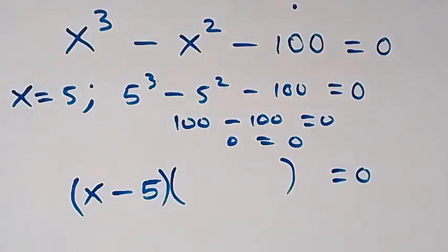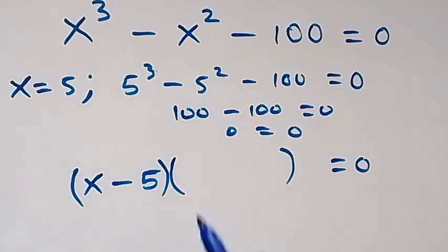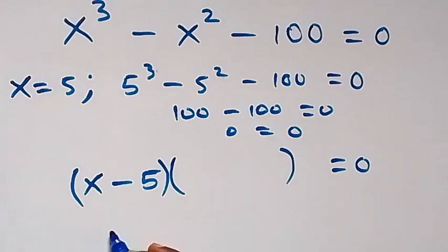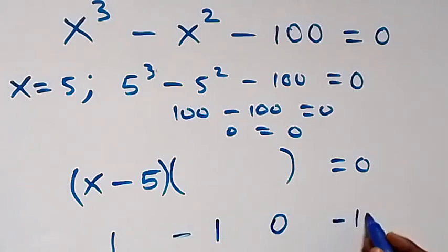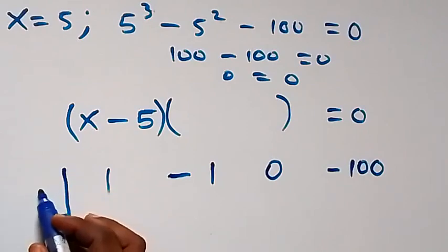Let's use synthetic division to find the other factor. Here we have the coefficient of x cubed as 1, coefficient of x squared as minus 1, then x to power 1 has coefficient 0. So we have 1, minus 1, 0, and the constant is minus 100.